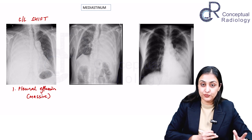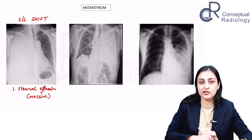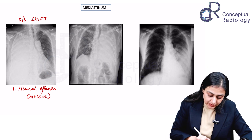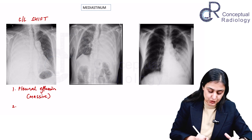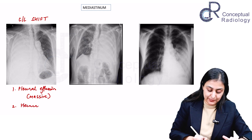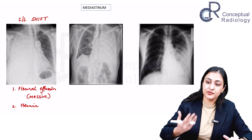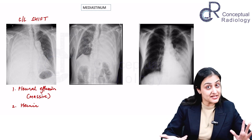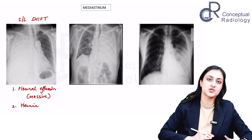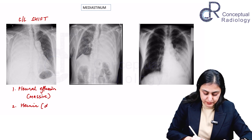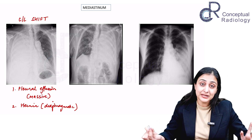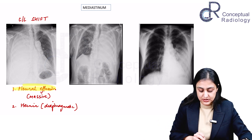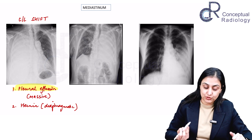In such cases, an ultrasound can definitely confirm the diagnosis of massive pleural effusion. The other, more remote differential to keep lower down is a diaphragmatic hernia — rarely, if the bowel loops are not distended with air, it may appear as an opaque hemithorax causing contralateral shift. But unless specifically asked, the story ends at massive pleural effusion.